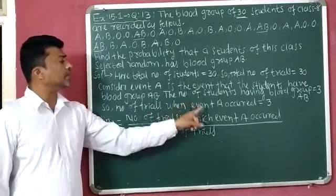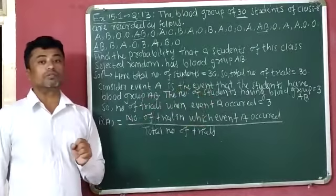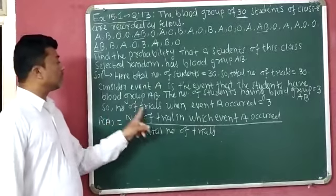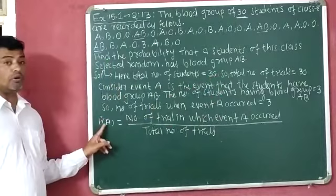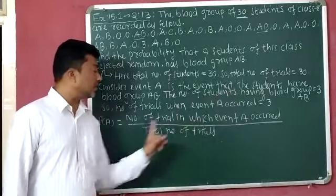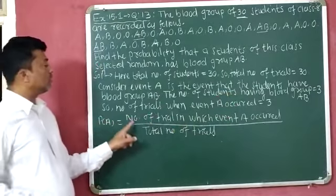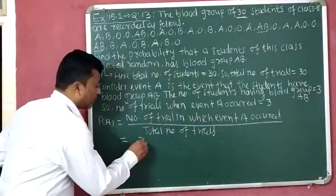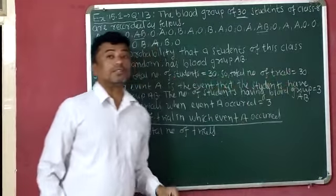Number of trials when event A occurred is equal to 3, because the number of students who have blood group AB is equal to 3. Probability of event A equals number of trials in which event A occurred divided by total number of trials. Number of trials when event A occurred is 3, and total number of trials is 30.